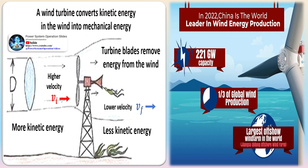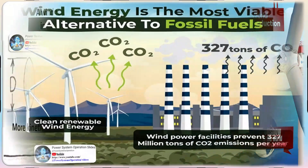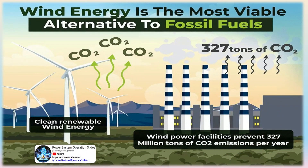Betz's law describes the ideal braking of the wind. The more kinetic energy a wind turbine pulls out of the wind, the more the wind will be slowed down as it leaves the turbine. If we try to extract all the energy from the wind, the air would move away with speed zero — the air could not leave the turbine. In that case, we would not extract any energy at all, since all the air would also be prevented from entering the rotor.